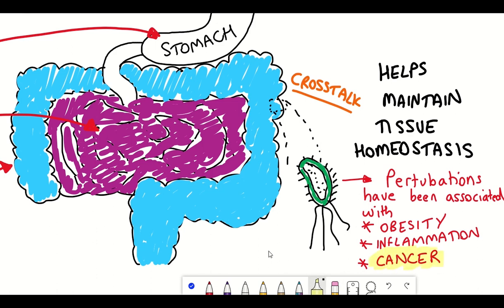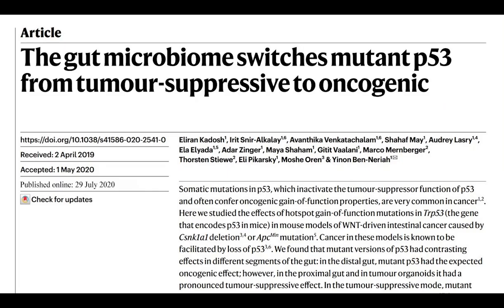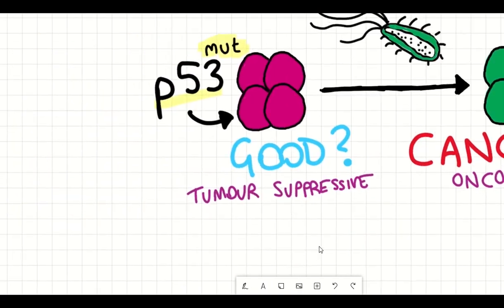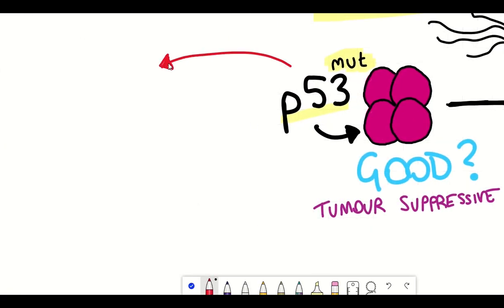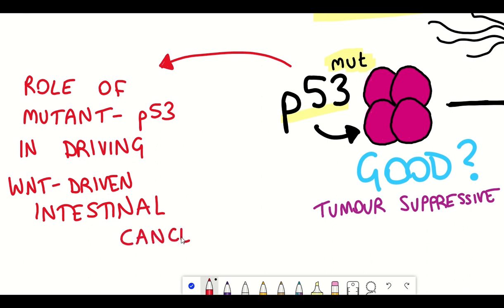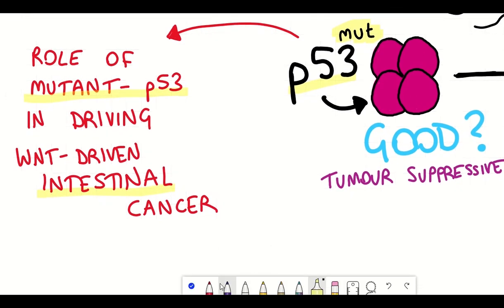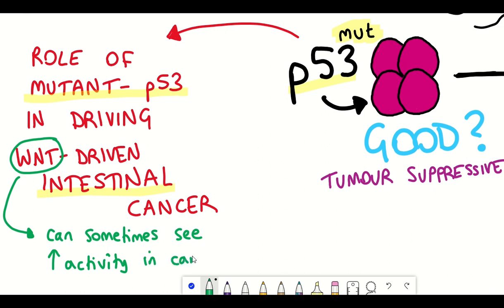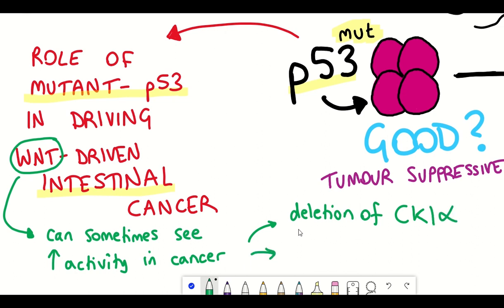So what were the authors of the study trying to achieve? They were interested in understanding how mutant p53 plays a role in driving the transformation of Wnt-driven intestinal cancers. Wnt signalling is a pathway that promotes growth and is commonly upregulated within cancer, in particular cancers of the intestine. These cancers are typically driven by the deletion of either the gene casein kinase 1-alpha, or by mutations within the APC gene.